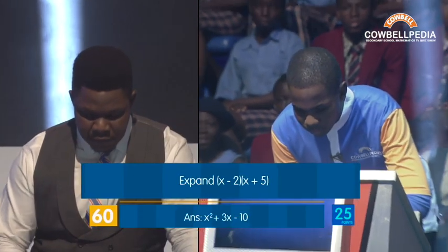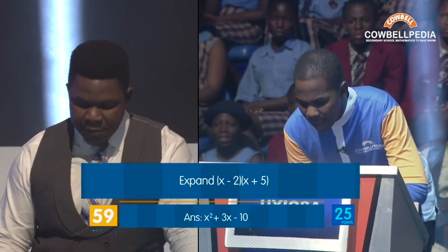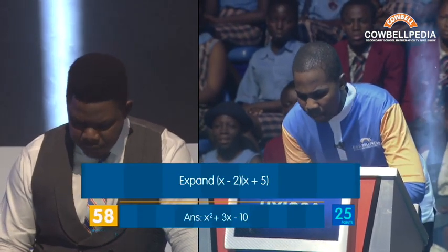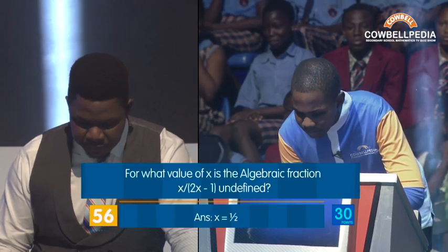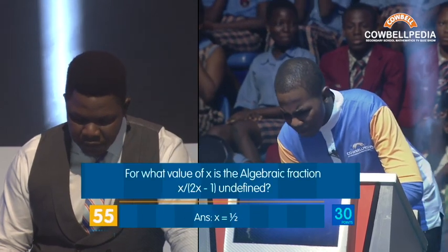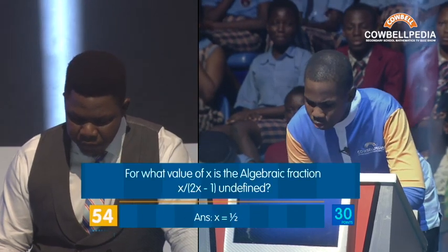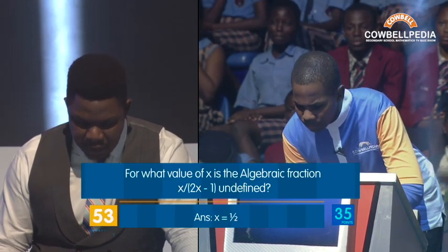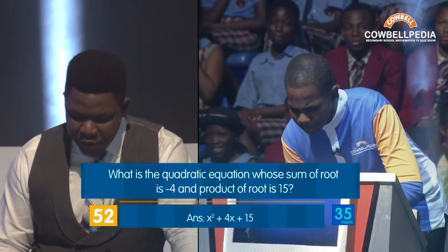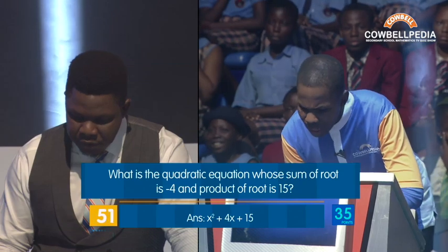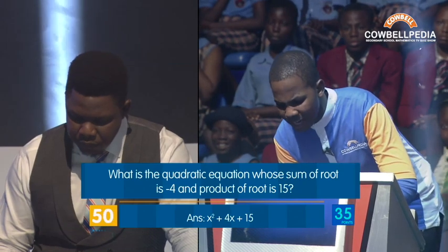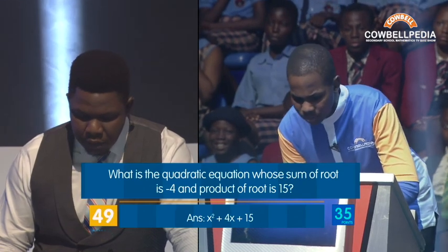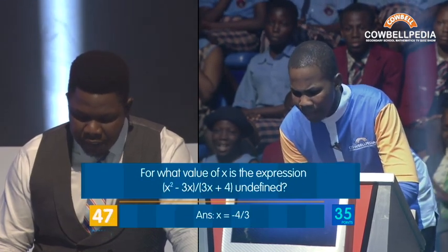Uyosa, yes, Quizmaster. I wish you all the best. Your Cowbellpedia 60 Seconds of Fame starts now. Expand X minus 2 times X — X squared plus 3X minus 10. Correct. For what value of X — 1 over 2. Correct. What is the quadratic equation whose sum of roots — X squared plus 4X minus 15. Incorrect.